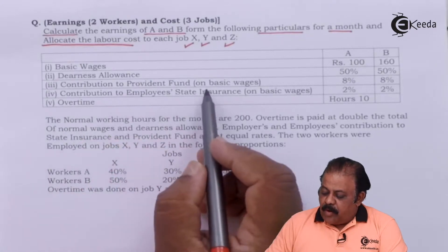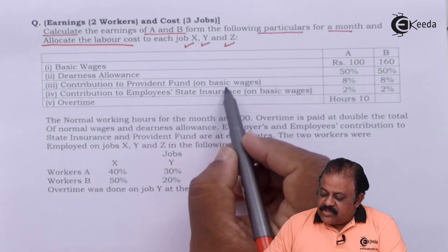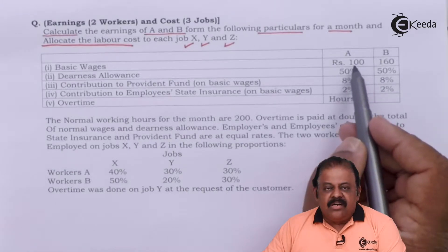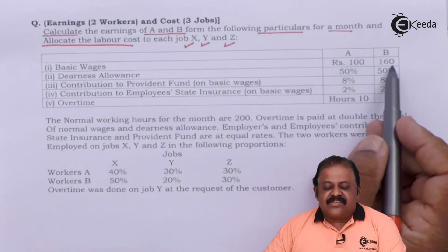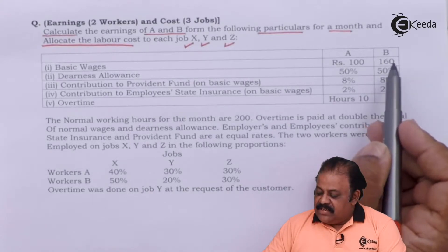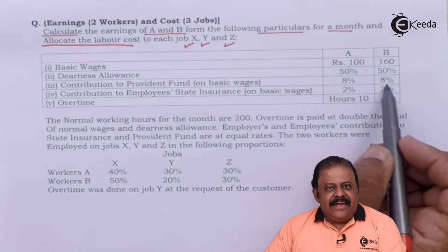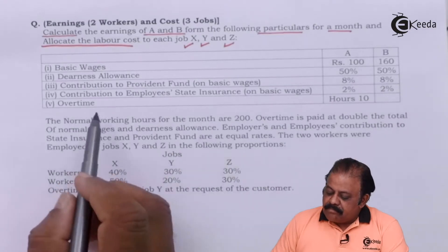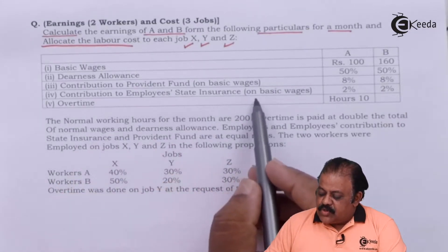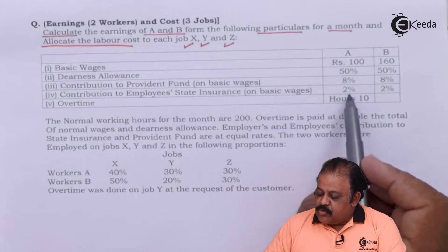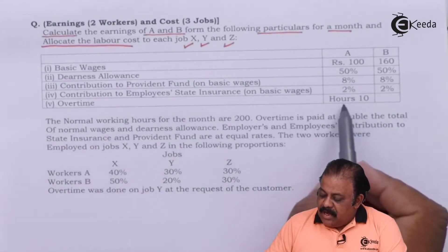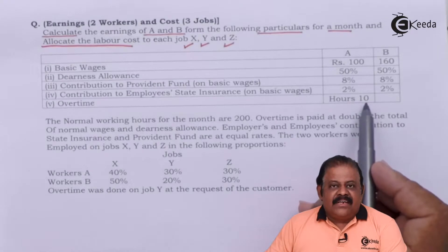Contribution to Provident Fund is based on basic wages at 8%, so 8% on Rs. 100 for A and 8% on Rs. 160 for B. Contribution to Employee State Insurance is also on basic wages at 2% for both workers.